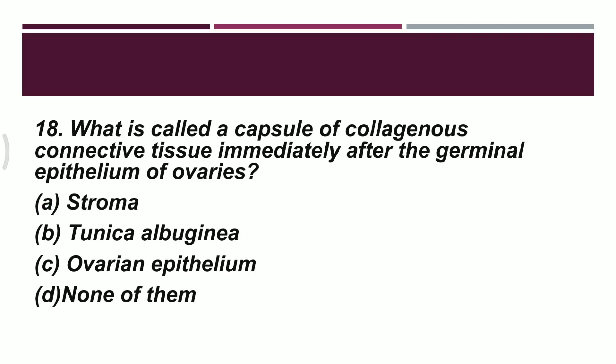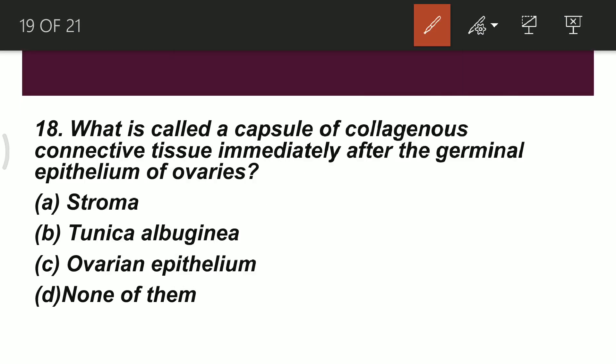Question 18: what is the capsule of collagenous connective tissue called that comes immediately after the germinal epithelium of the ovaries? Option A: stroma. Option B: tunica albuginea. Option C: ovarian epithelium. Option D: none of them. The correct option is B — tunica albuginea — this is the capsule of collagenous connective tissue found just inside the germinal epithelium of the ovaries.